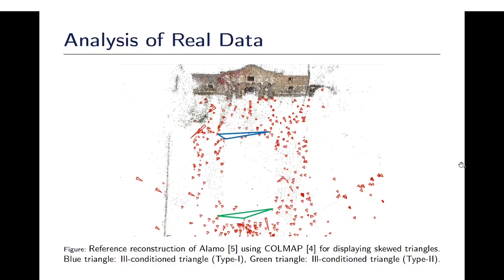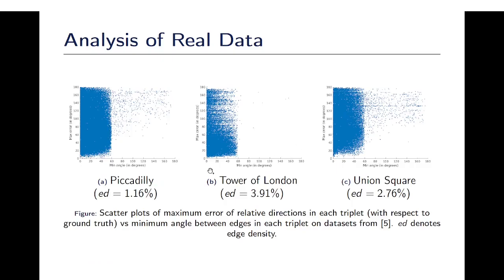We first analyze the real data before presenting the results. Here we provide a reference reconstruction of Alamo dataset where we display the skewed triangles in blue and green. This shows that skewed triangles are present in real data which is also confirmed by these scatter plots where the x-axis represents the minimum angle in degrees. It can be seen that there are many triplets where the minimum angle is close to zero.